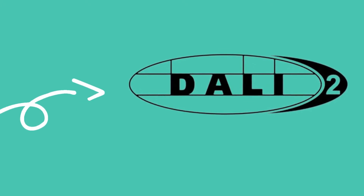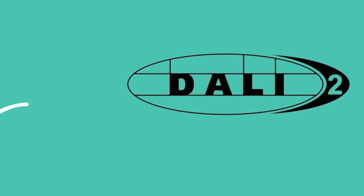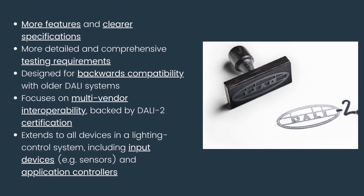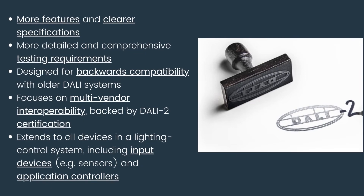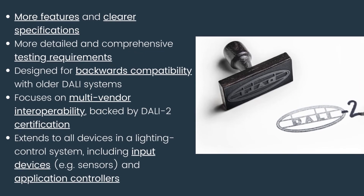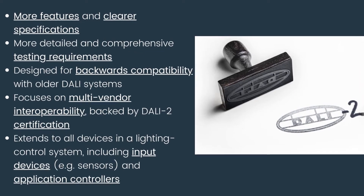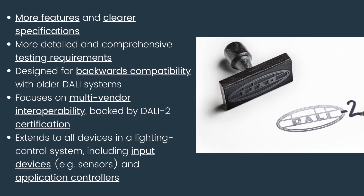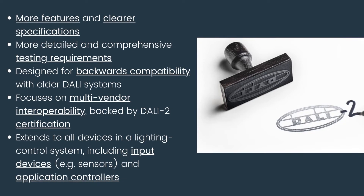Features of DALI 2 include clear specifications and comprehensive testing requirements. DALI 2 is designed for backwards compatibility with older DALI systems, with a focus on multi-vendor interoperability, and DALI 2 extends to all DALI devices in a DALI lighting control system.